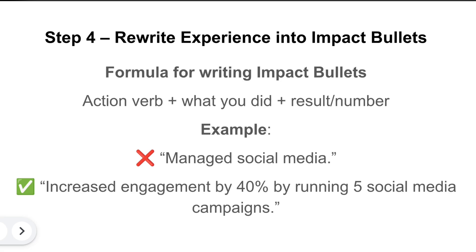Step 4: rewrite experience into impact bullets. The format of impact bullets is very important: first comes the action verb, then what you did, and then the result or number. For example, you cannot simply write 'manage social media' — it describes nothing. Instead, say 'Increased engagement by 40% by running five social media campaigns.' As mentioned earlier, you have to talk quantitatively, not qualitatively.